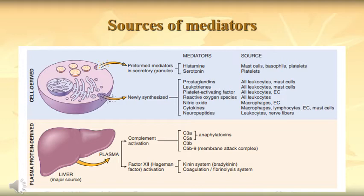Cell-derived mediators are released from cells as chemical substances. As shown in this diagram, mediators can be preformed or newly synthesized at the time of inflammation. Preformed mediators present in cells are histamine and serotonin, released mostly from mast cells, basophils, and platelets. Newly synthesized mediators — produced and released at the time of inflammation — include prostaglandins, leukotrienes, platelet activating factor, ROS, NO, cytokines, and neuropeptides. Their sources include mostly all leukocytes, mast cells, macrophages, nerve fibers, and leukocytes.